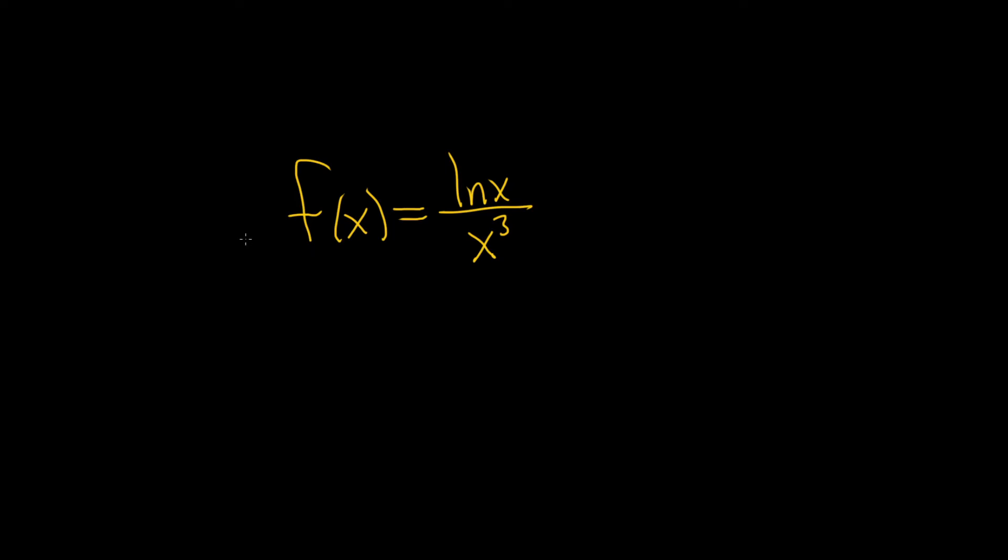In this problem, we have to find the derivative of the natural log of x divided by x cubed. So we have a quotient. So one strategy is to use something called the quotient rule.